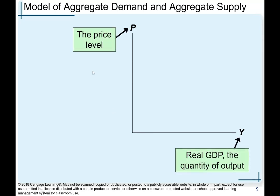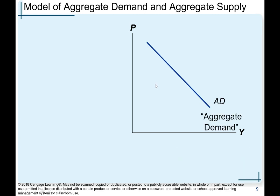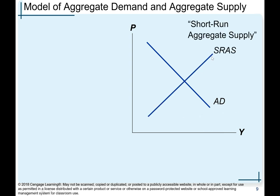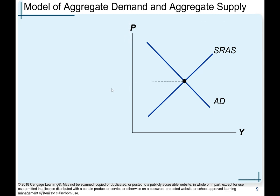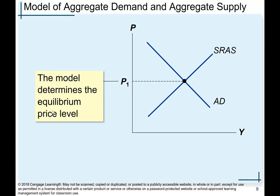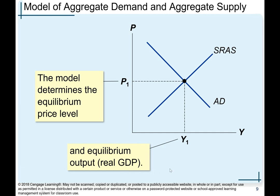That new model is aggregate demand and aggregate supply. The AD-AS graph has a downward-sloping aggregate demand curve and an upward-sloping short-run aggregate supply curve. The horizontal axis is real GDP (represented by Y) and the vertical axis is the price level. The model determines the equilibrium price level and equilibrium output.